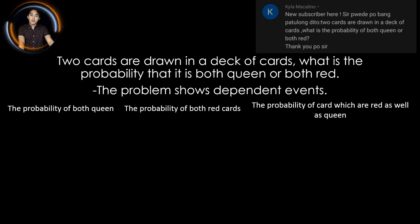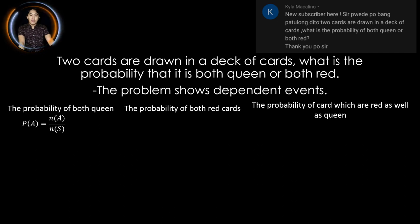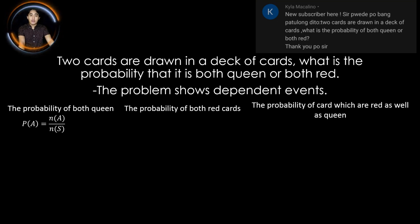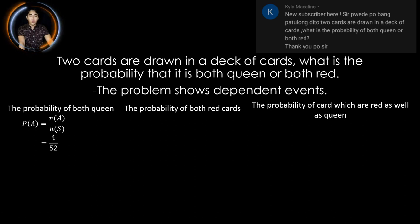We let this situation as element A, so we have the probability of A equal to n(A) over n(S). Since the problem is a dependent event, in the first draw from the deck of cards, there are four queens out of 52 cards. So the probability in the first draw is 4 over 52.